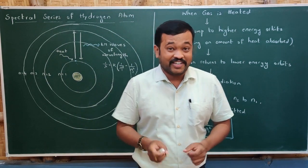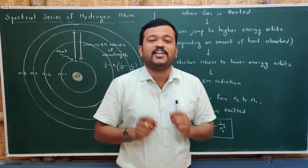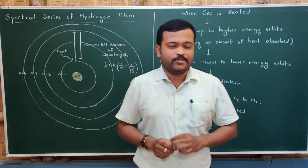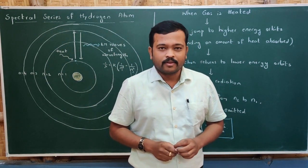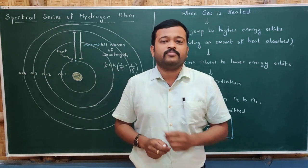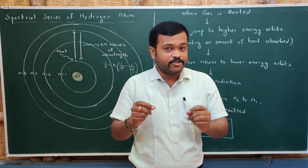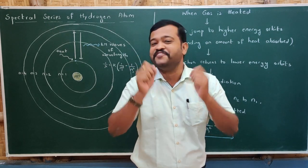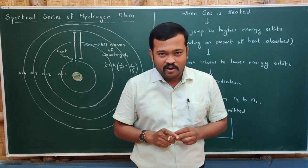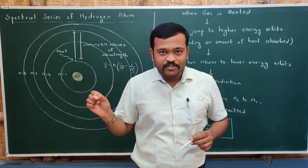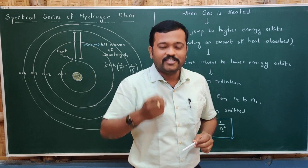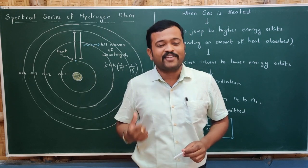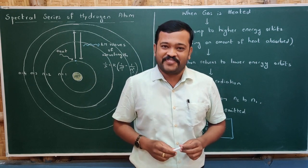Welcome to part two of the chapter atoms. An atom always emits light of discrete wavelengths — not continuous. Why not continuous? How does it emit? That will be the topic of today's session.